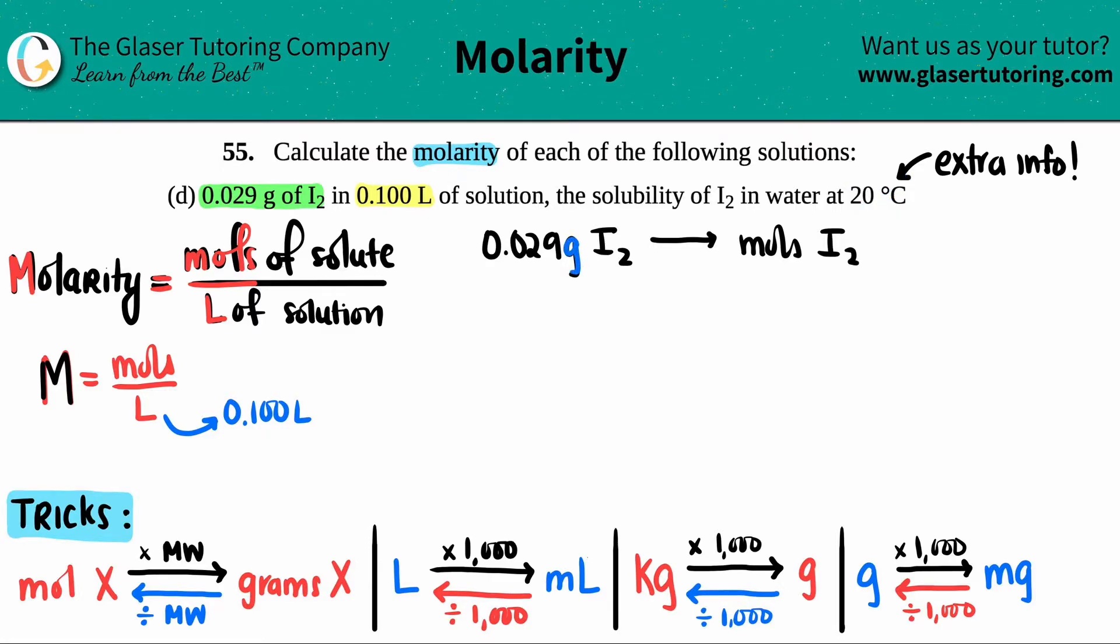Now we need to convert from grams to moles. How do we do that? We can do dimensional analysis with this small trick: I was given grams of X, and if you're converting into moles, it has to be of the same compound. We have that here—we're starting with I2 and ending with I2, so we can do this trick.